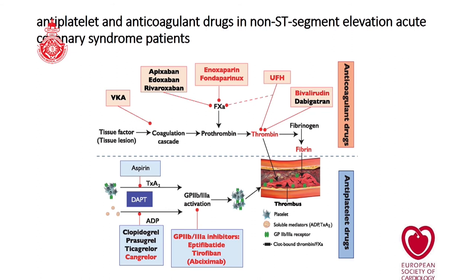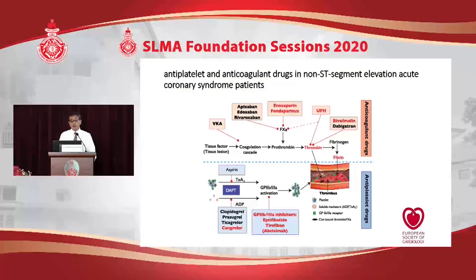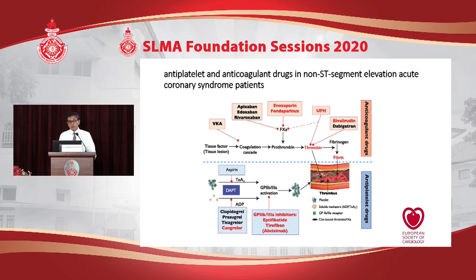Our antithrombotic armory consists of anticoagulant and antiplatelet drugs. Anticoagulants used mainly include unfractionated heparin or enoxaparin (fractionated heparin), and also bivalirudin, dabigatran, vitamin K antagonists, and novel oral anticoagulants — apixaban, edoxaban, and rivaroxaban. Antiplatelet drugs include aspirin (a thromboxane A2 inhibitor) and P2Y12 inhibitors, which are ADP-receptor blockers: clopidogrel, prasugrel, ticagrelor, and cangrelor (IV agent, currently not available in Sri Lanka). Glycoprotein 2B3A inhibitors include abciximab, used in our cath labs, as well as tirofiban and eptifibatide.